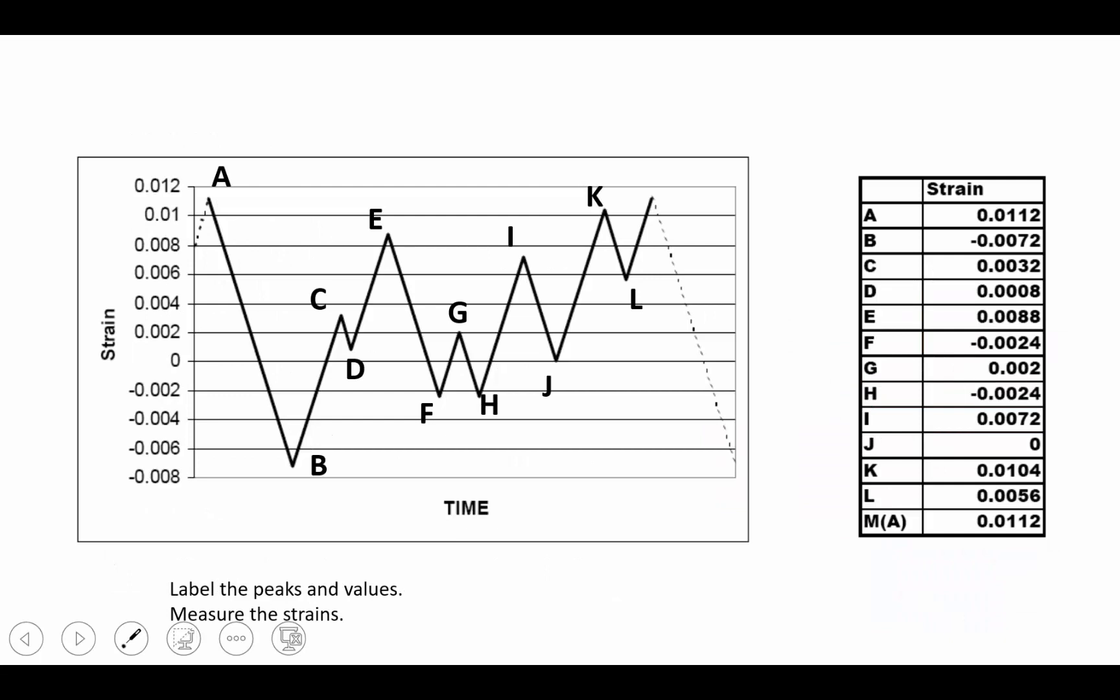In our first step, we're going to apply the rain flow counting algorithm. What we'll want to do is we'll want to label the peaks and the valleys throughout this strain history data: A, B, C, D, E, F, G, H, I, J, K, and L. And we'll want to note what value of strain each of those peaks and valleys is located. We'll measure the strain.